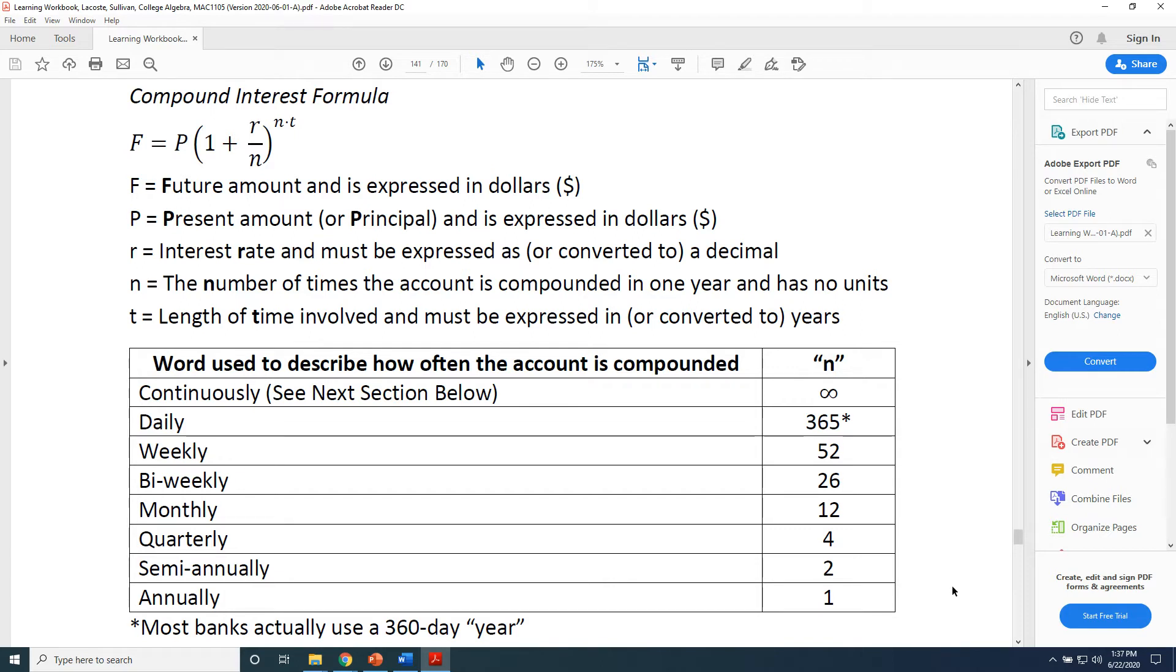t, however, is the number of years you leave that money with the bank. So for example, if you leave your money with the bank for five years, t would be five. And if you leave it for just six months, t would be one half because six months is half of a year.